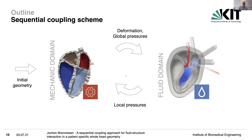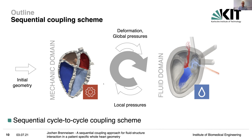Using this sequential coupling scheme, we take the deformation and global pressures, pass them to the fluid domain, then extract the local pressures and give them back to the mechanical domain. We always focus on a whole heart cycle: we start with the initial geometry, compute one heart cycle of mechanical simulation, give the deformation to the fluid domain, then compute once again a whole heart cycle in fluid, and give the pressures back to a mechanical simulation. In this way, our loop is closed. So we implemented a sequential cycle-to-cycle coupling scheme, where cycle-to-cycle means a full heart cycle.